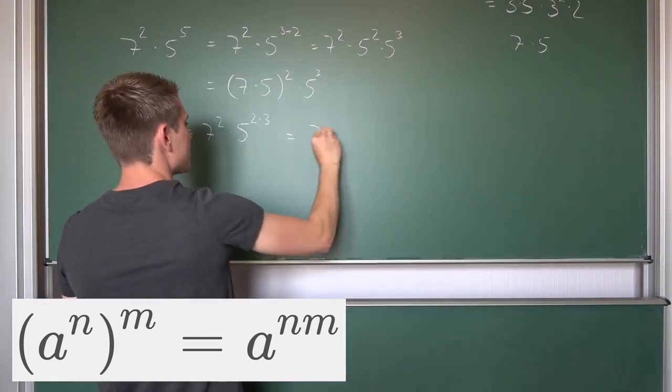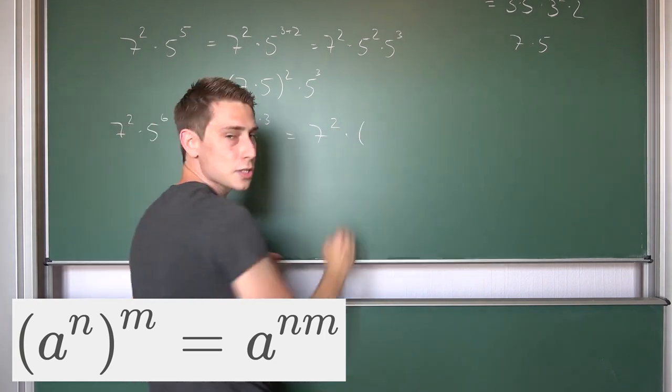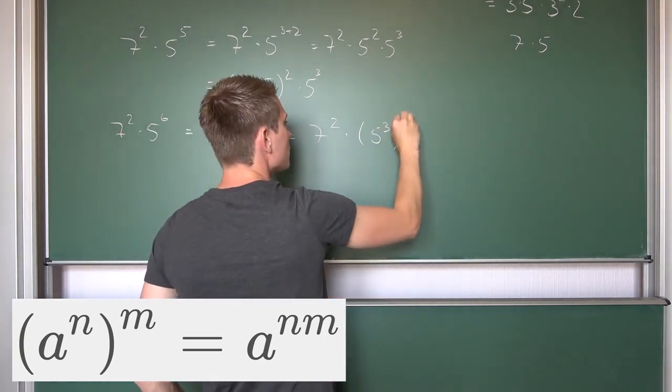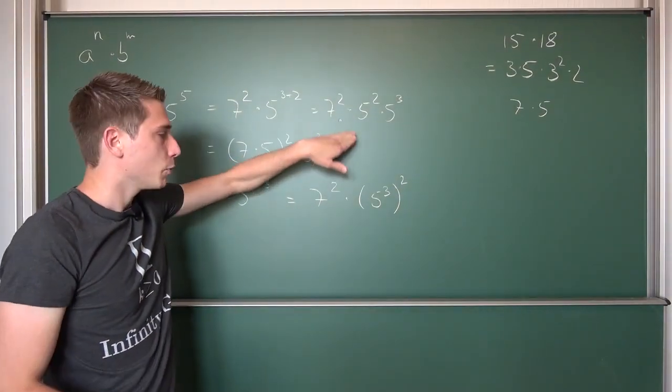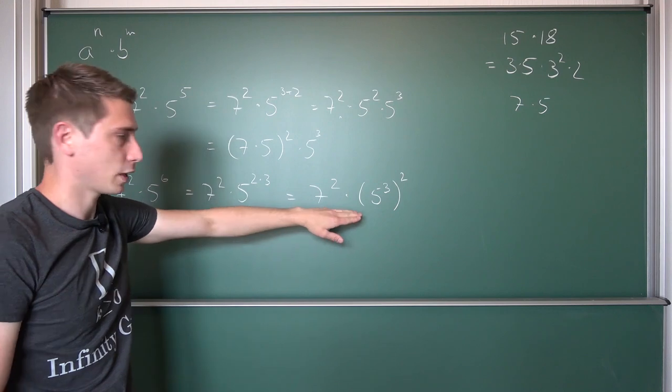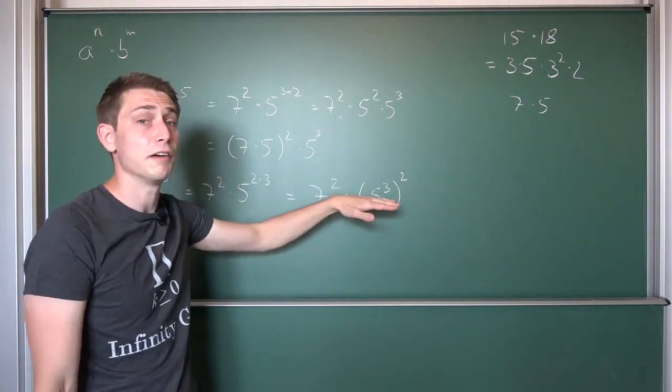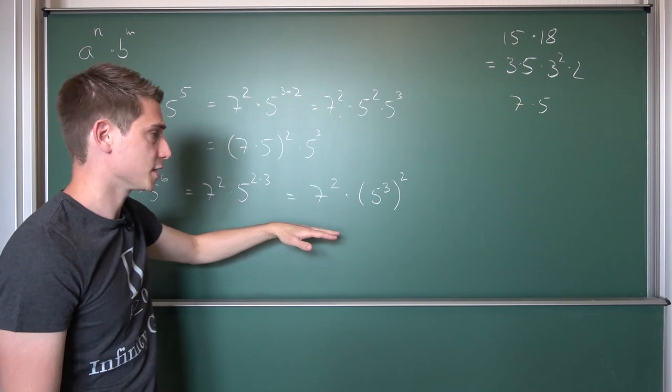Using associativity leaves us with 7 squared times 5 to the 3rd power and the whole thing squared. And now we are at the same situation yet again. We are going to have different bases. Okay, 5 cubed is just another base now. You can call it x but the same exponents.